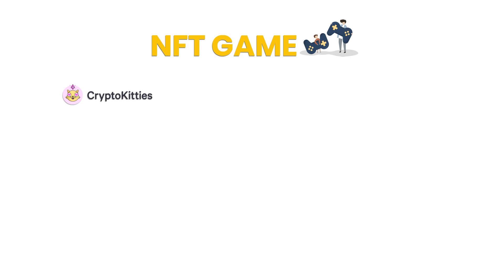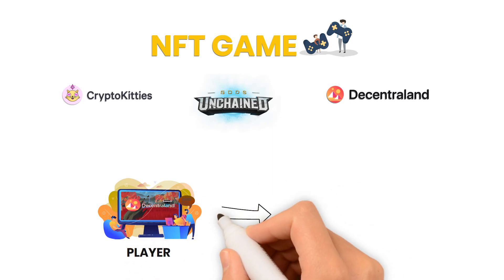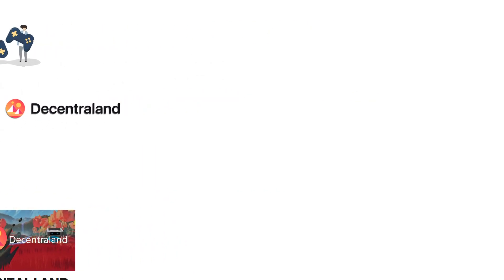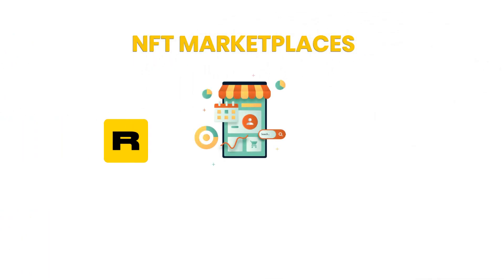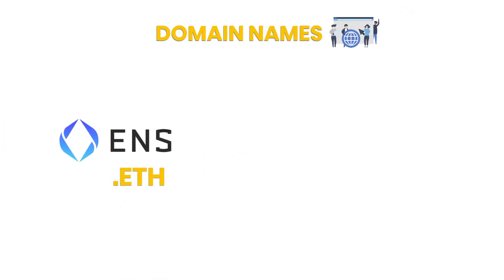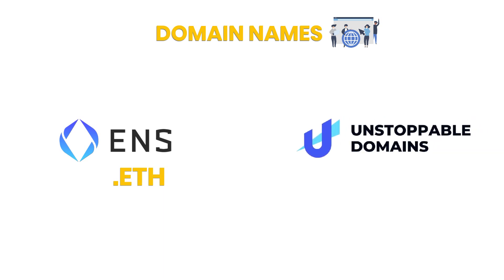NFT games: Besides the already mentioned CryptoKitties, there are a few other fairly popular games leveraging the power of NFTs, such as Gods Unchained and Decentraland. Decentraland is an interesting example as the players are able to buy parcels of digital land that can be later resold or used as advertising space within the game. Other examples include marketplaces for digital art such as Rarible, SuperRare, and even aggregators of marketplaces like OpenSea. Yet another example of something scarce that can be represented as NFTs are domain names — for example, Ethereum Naming Service with .eth extension, and Unstoppable Domains with .crypto extension.